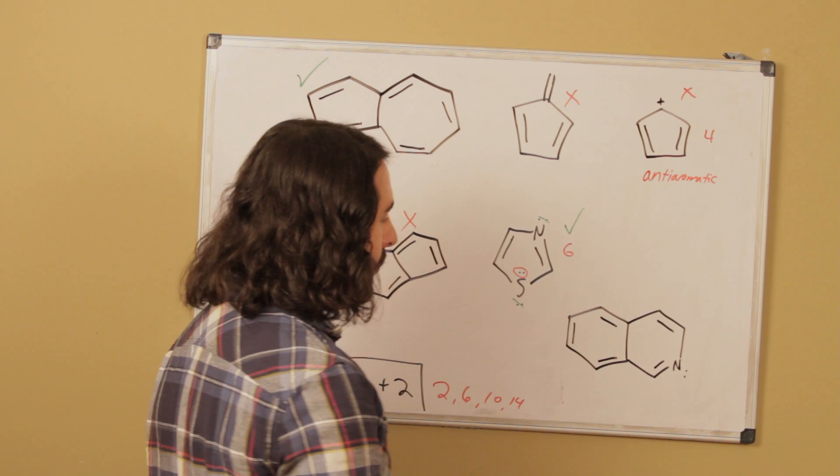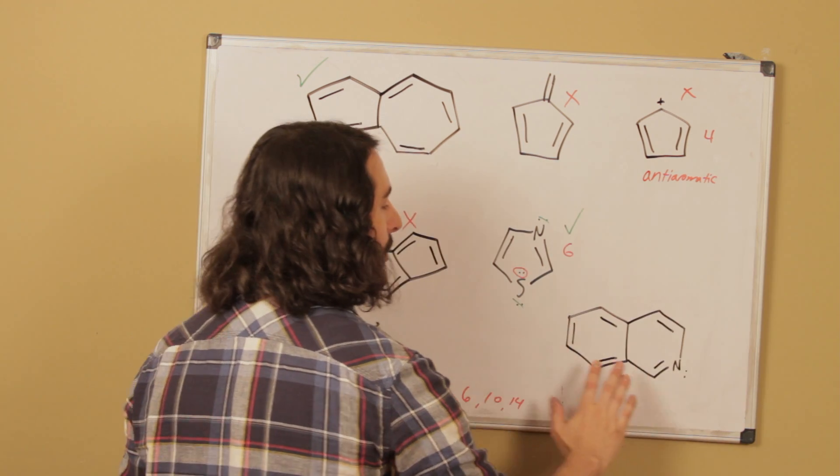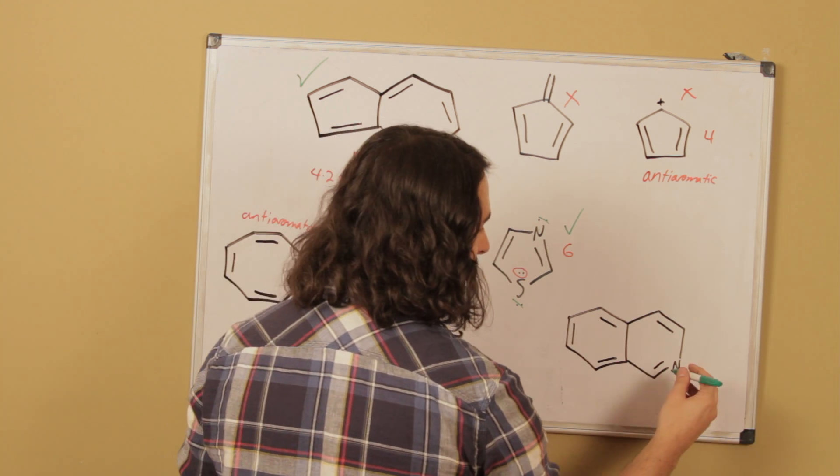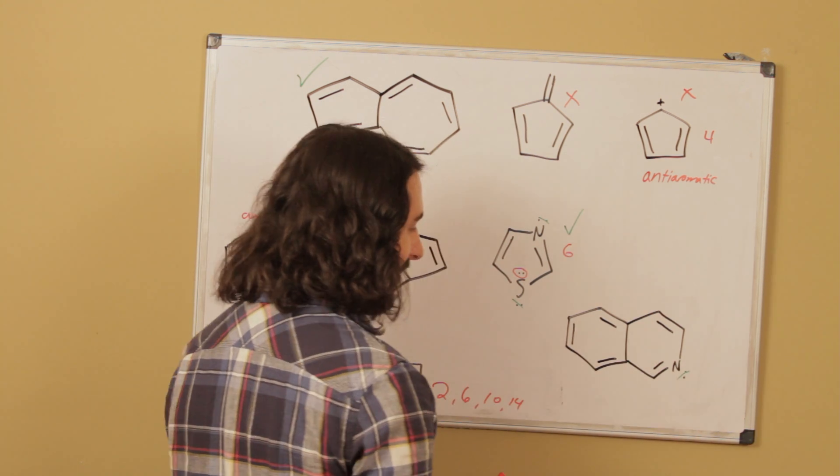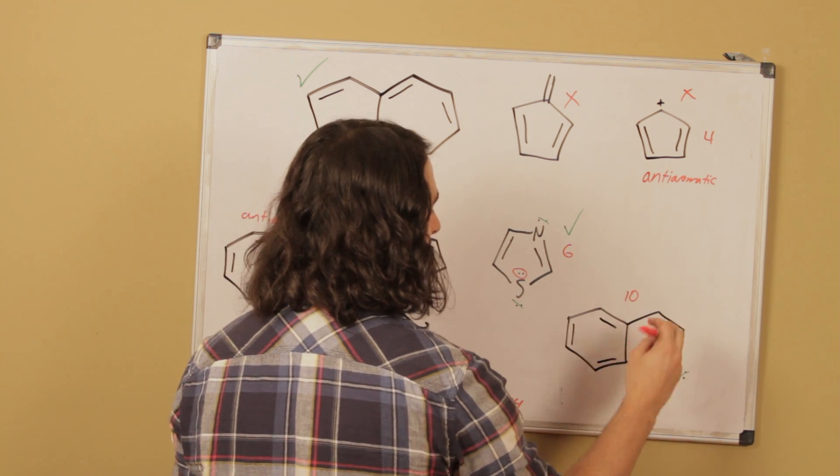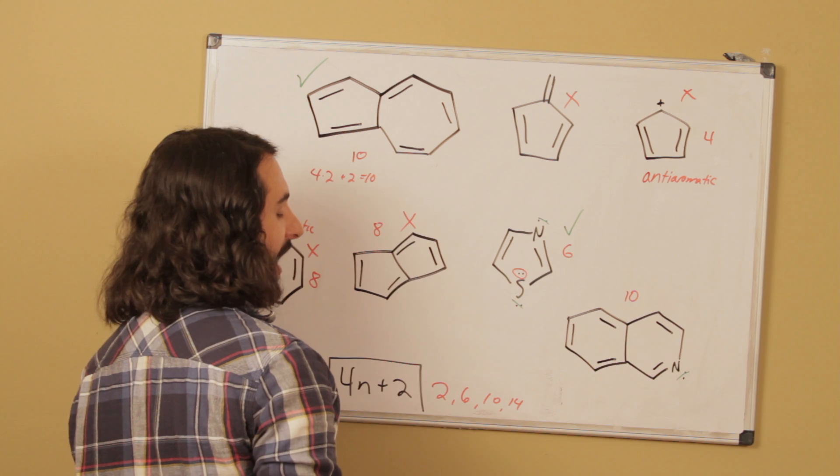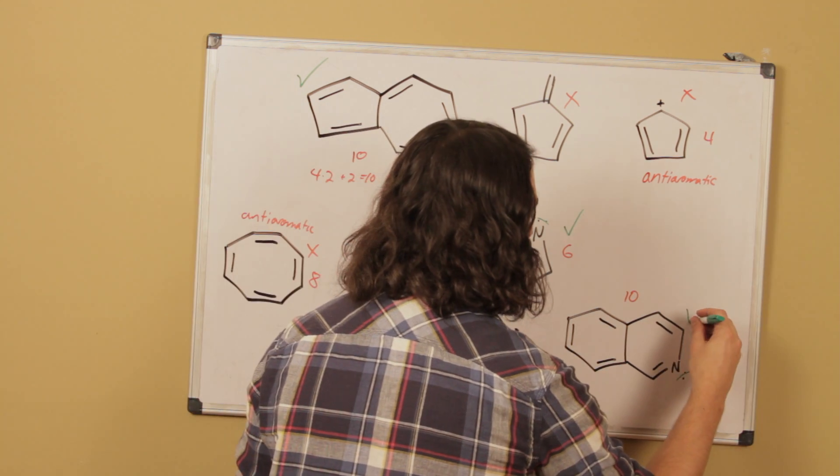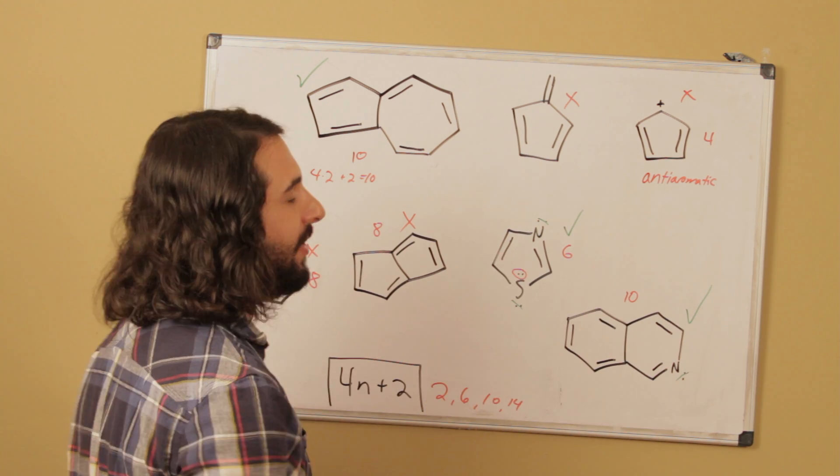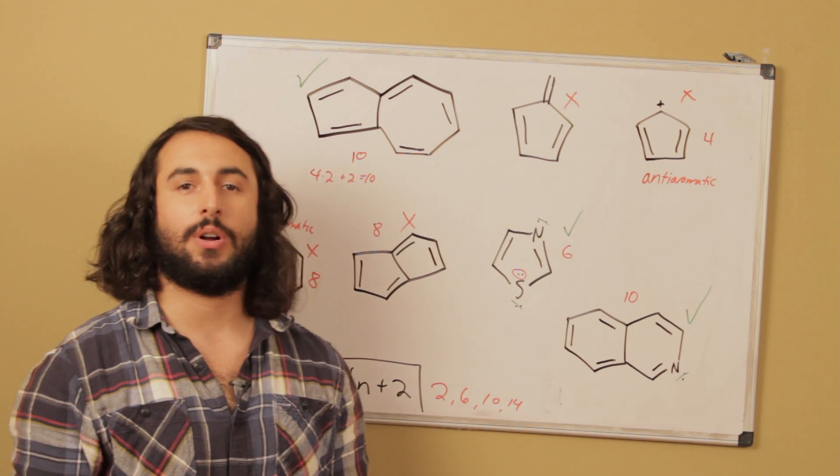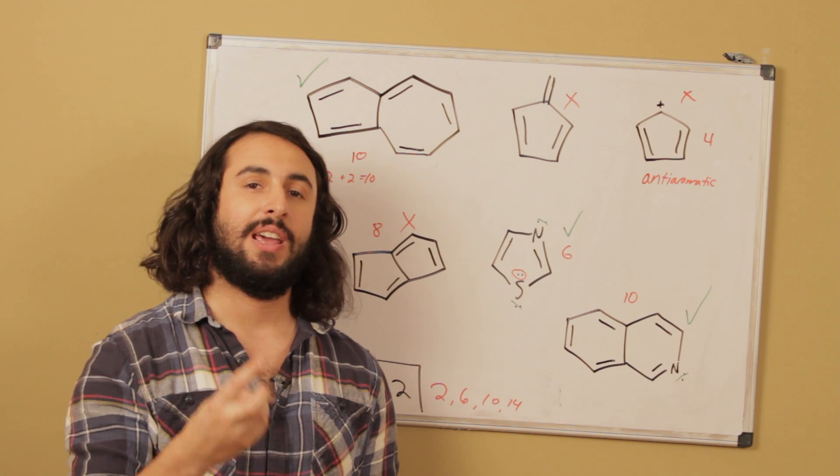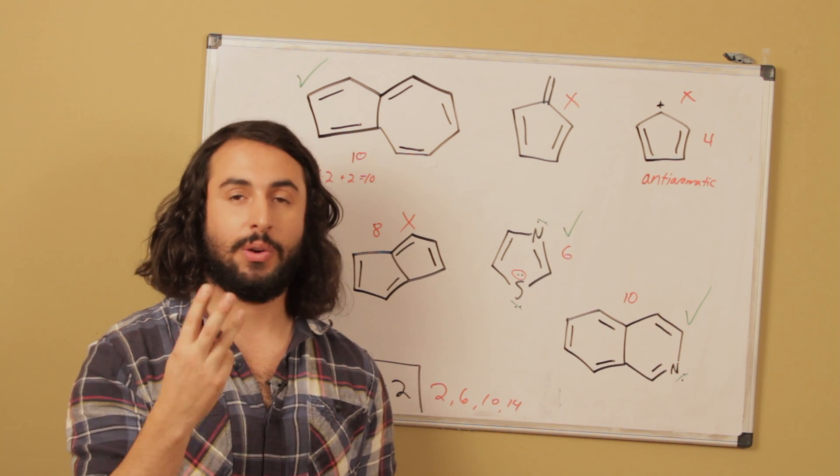Looking at this last one, we've got something that's fully planar, fully conjugated. We can push these pi bonds all the way around. In this case, the nitrogen lone pair is not needed because we have 2, 4, 6, 8, 10 pi electrons even without that lone pair. That does satisfy Huckel's rule. So there we go, that one is aromatic. So we've got 3 aromatic, 4 that are not and we must recall that we need the ring system to be fully planar, fully conjugated and to satisfy Huckel's rule in order to be aromatic.